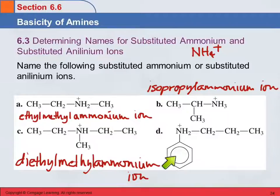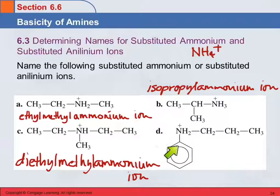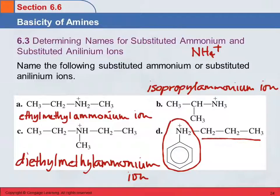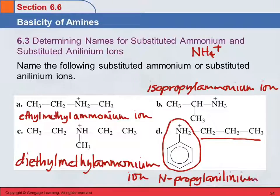In letter D, anytime you see a benzene ring in the structure, that part probably has a special name. This part is aniline, so this becomes anilineum ion. Then we name what's attached to the nitrogen, which is a propyl group. The propyl is on the nitrogen, so this is N-propylanilineum ion.